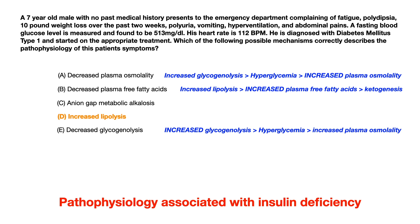Let's look at answer choice C: anion gap metabolic alkalosis. Well, it's not an alkalosis — it's an acidosis. That anion gap metabolic acidosis comes from excessive high levels of ketogenesis, which puts more ketones in the blood and causes the acidosis. Remember the mnemonic MUD PILES to recall the different causes of anion gap metabolic acidosis — the D in MUD PILES stands for DKA.